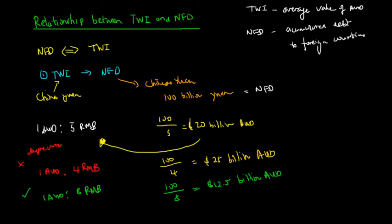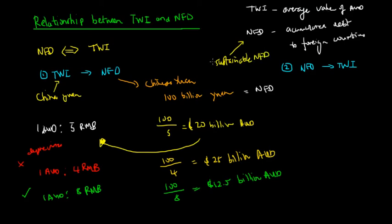Now we'll look at how the net foreign debt can affect the trade-weighted index. The goal of external stability is to have a sustainable net foreign debt. We don't have a precise definition of 'sustainable,' but it essentially means being able to pay off our debt at a timely rate — not that the debt is zero, but that it is payable from our existing financial situation.